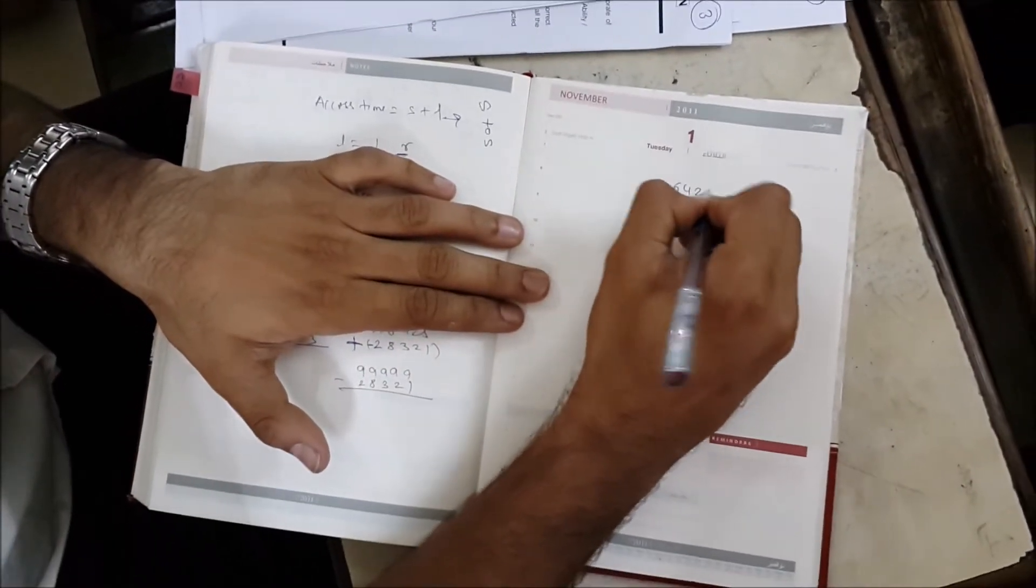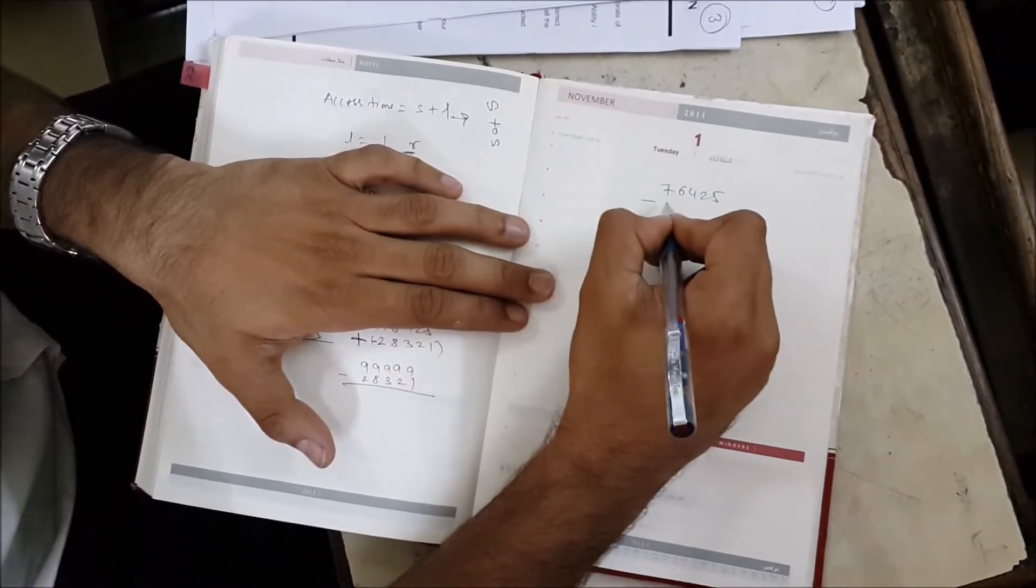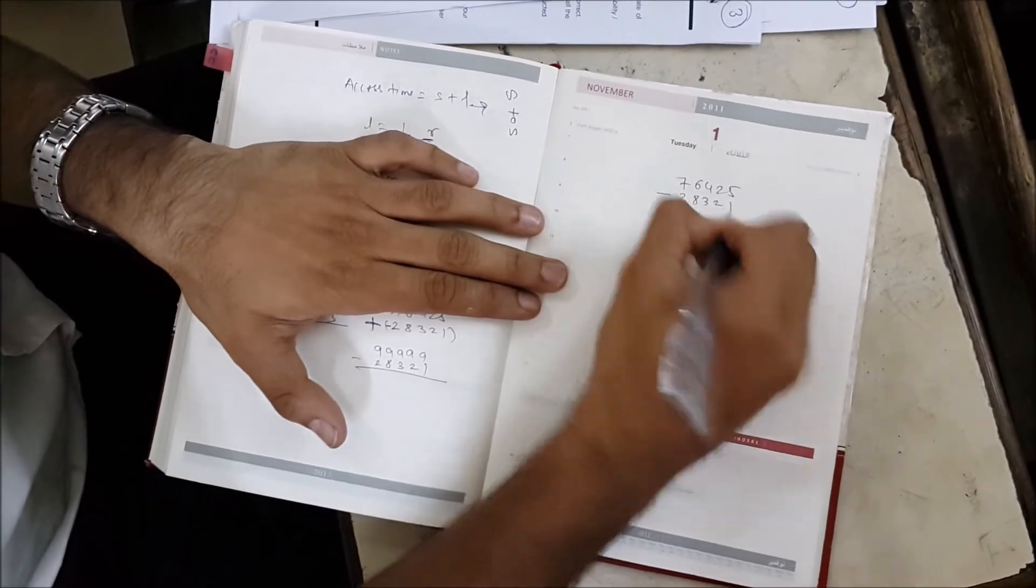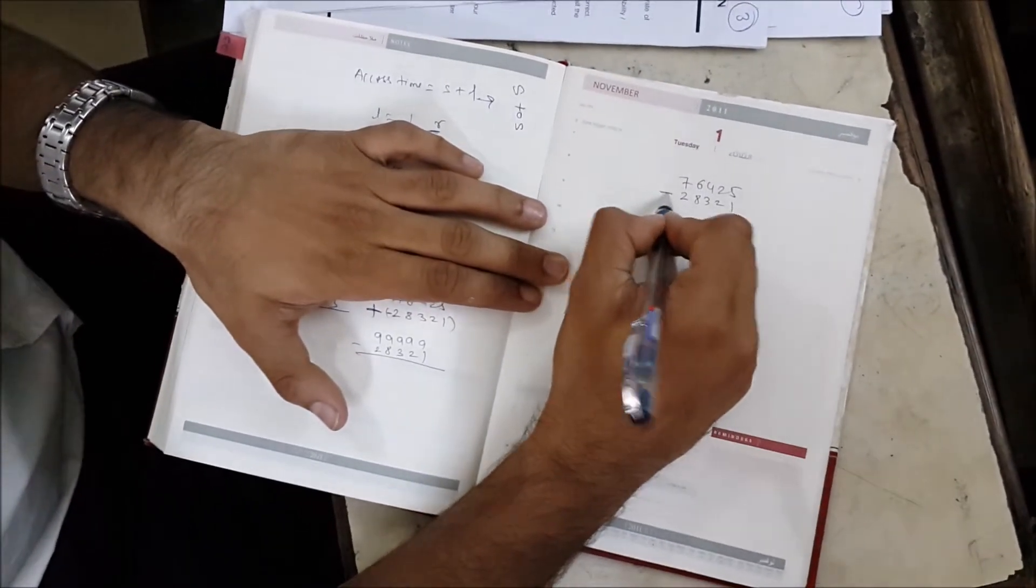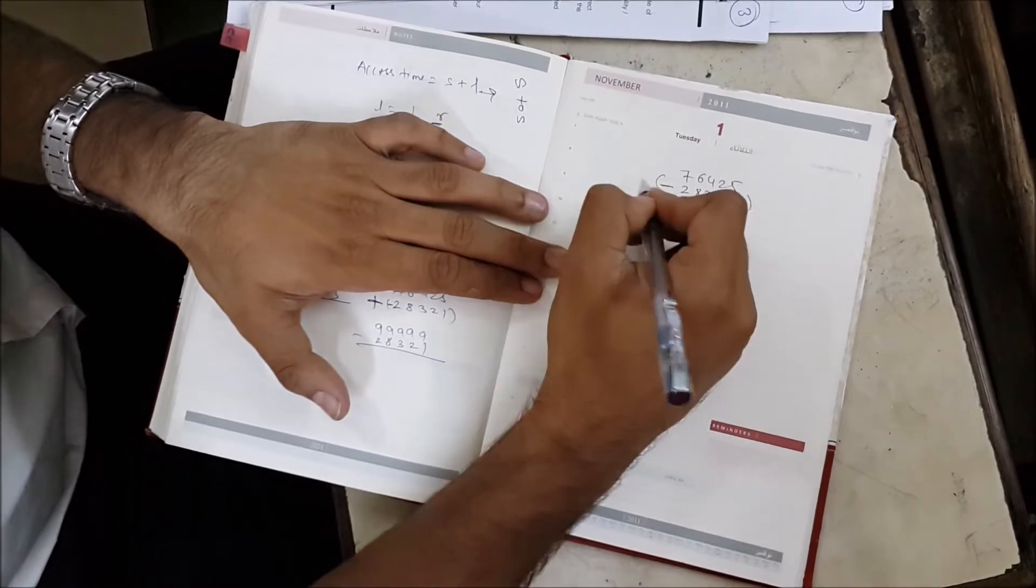We have 76425 and you have to subtract this number by 28321. Since we have a negative sign here, we have to make it positive. How to make it positive? By taking a plus outside.